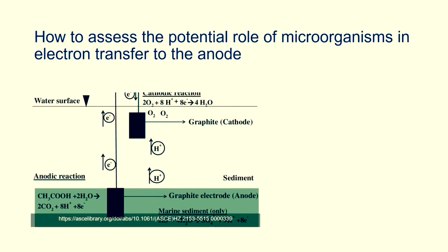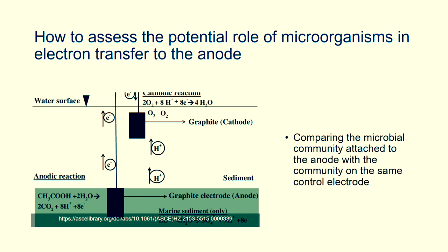How to assess the potential role of microorganisms in electron transfer to the anode? We constructed sediment batteries in laboratory aquariums using graphite anodes in anoxic marine sediments and graphite cathodes in upper aerobic water, and then comparing the microbial community attached to the anode with the community on the same control electrode.